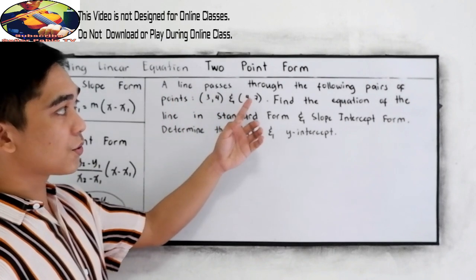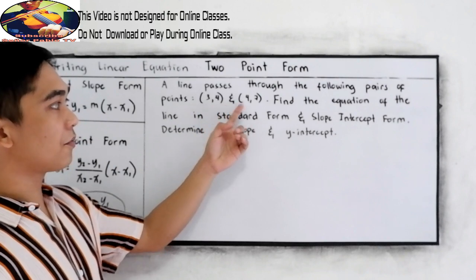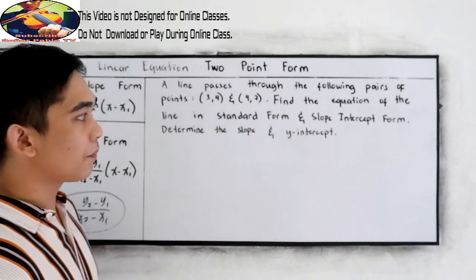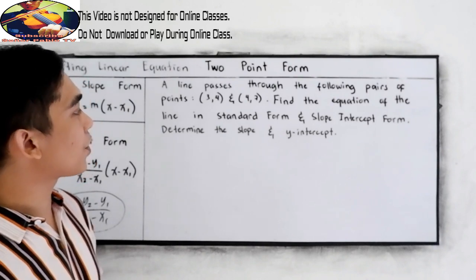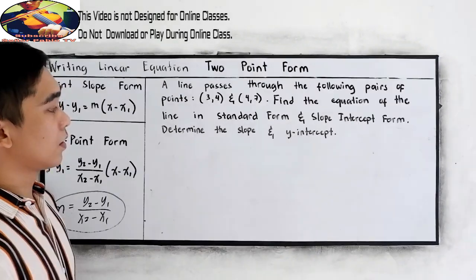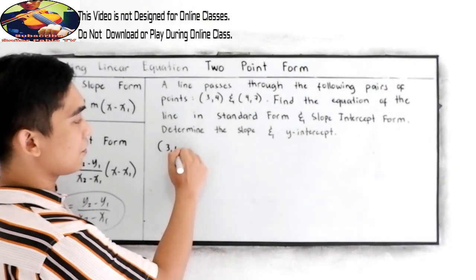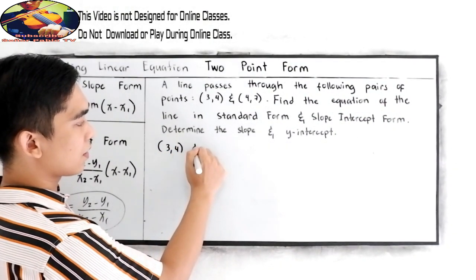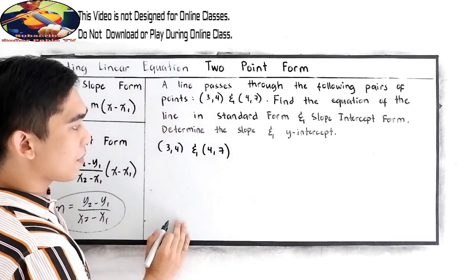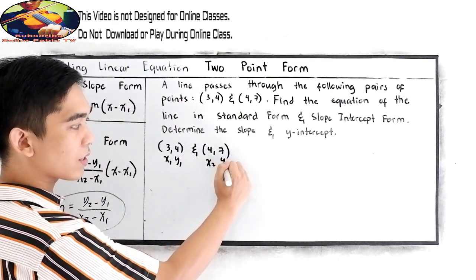Now, let's try this example. A line passes through the following pairs of points: (3,4) and (4,7). Find the equation of the line in standard form and slope-intercept form. Determine the slope and y-intercept. So, copy the given, (3,4) and (4,7). Then, let's name it as x sub 1, y sub 1 and x sub 2, y sub 2.